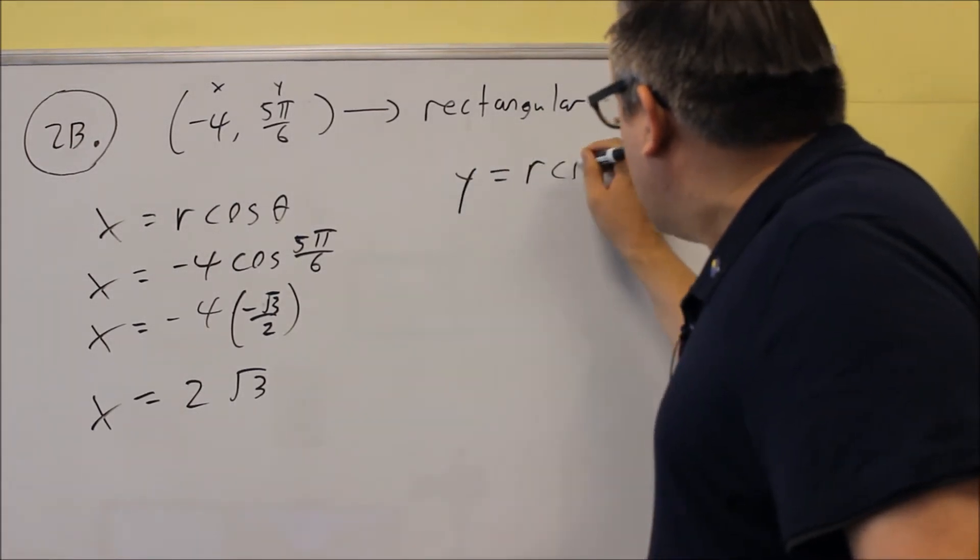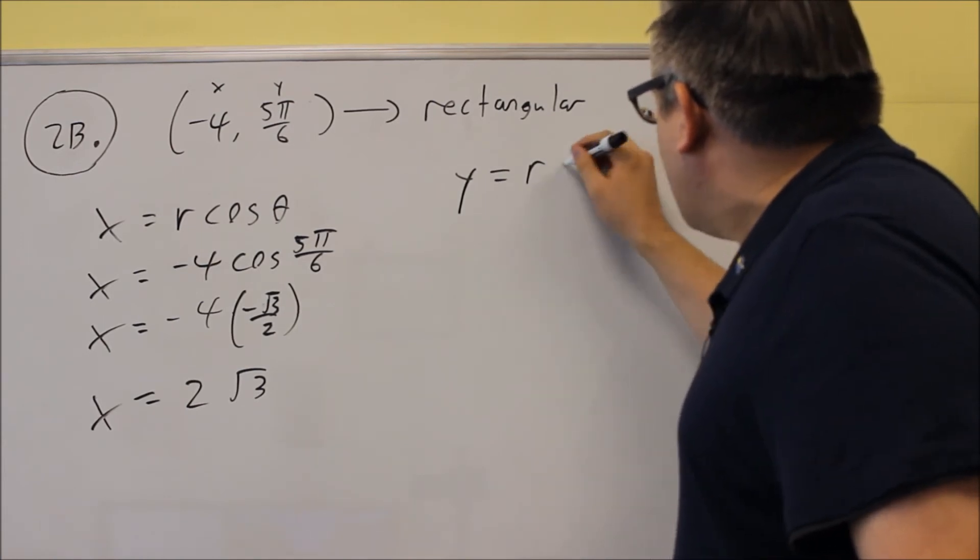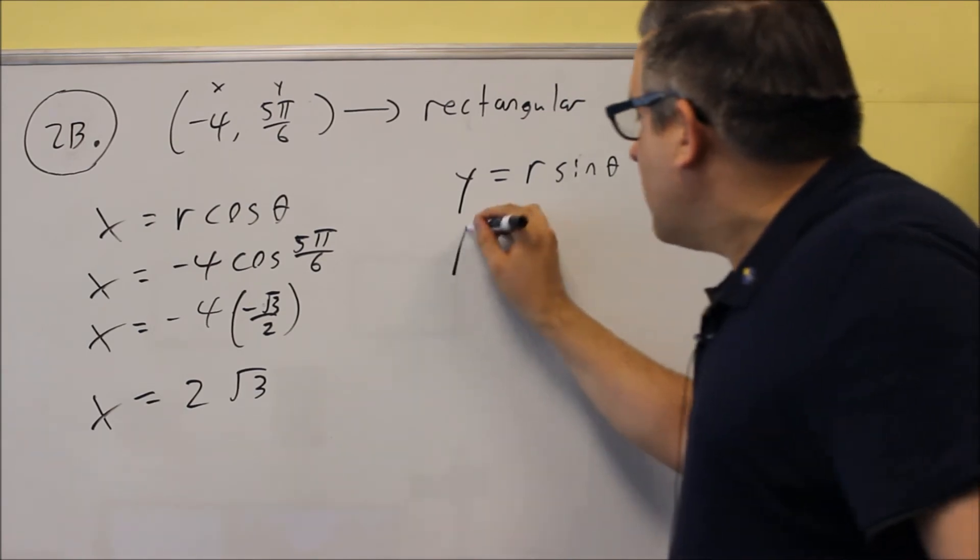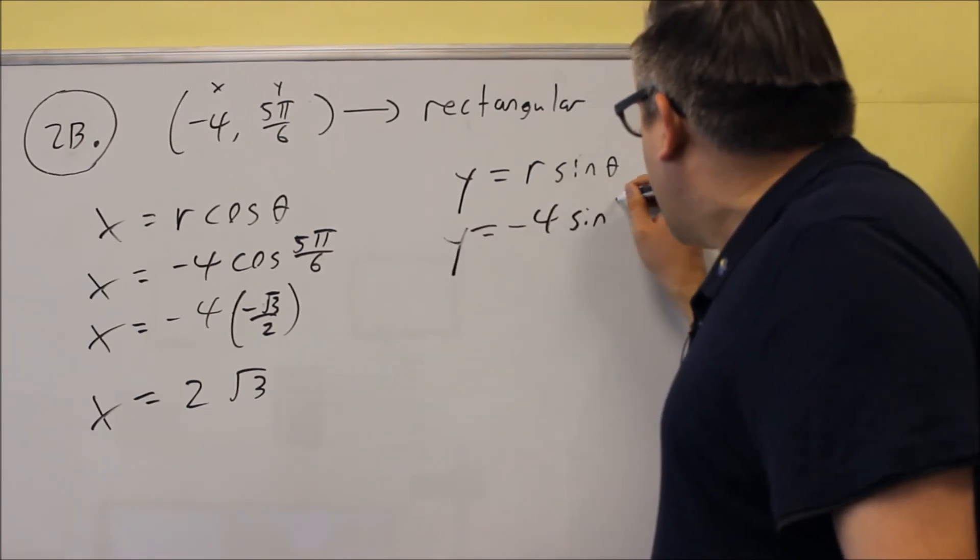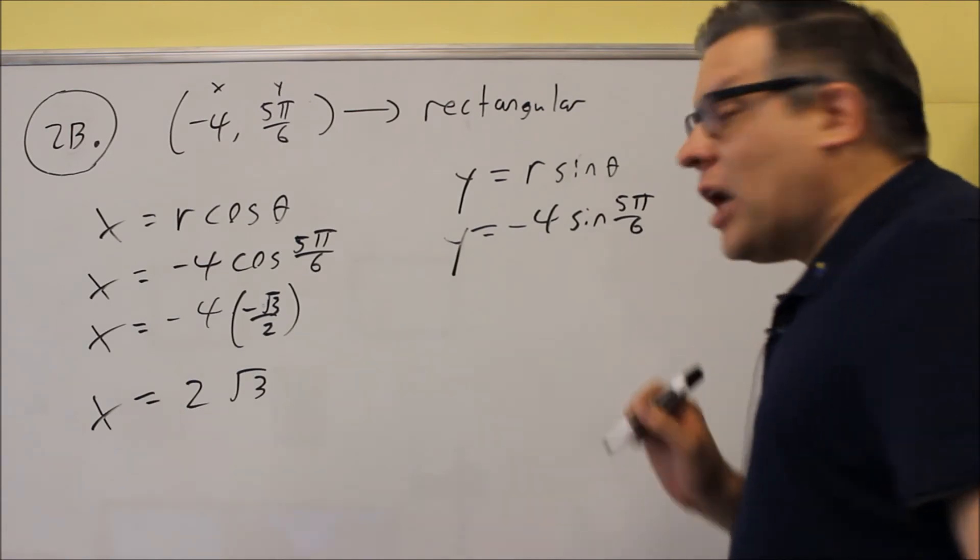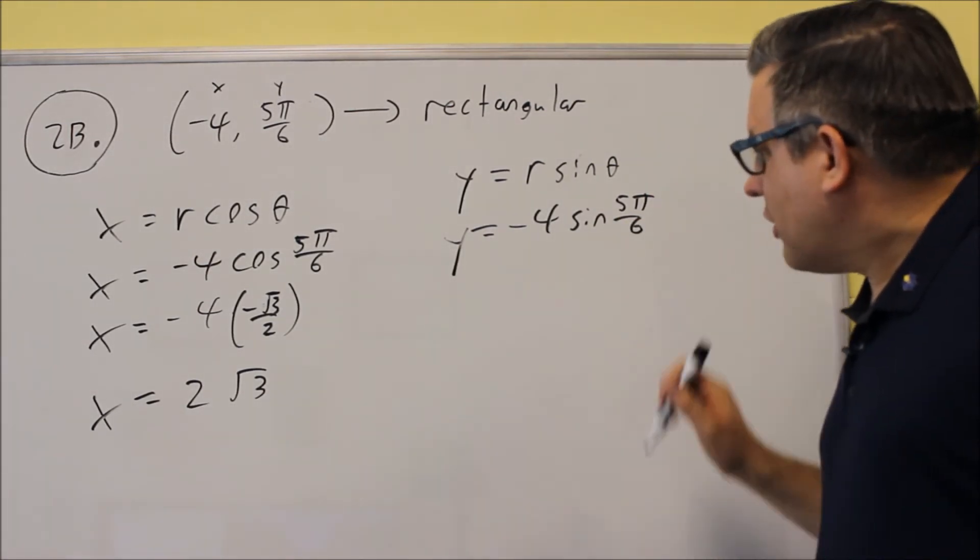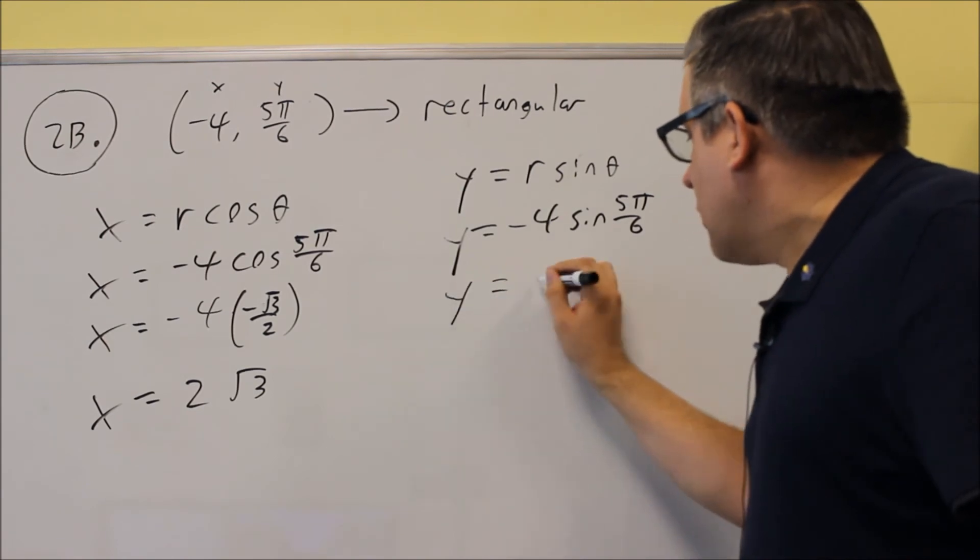To find the y, you're going to do r sine theta. Okay, so you have y equals r sine theta. Y is equal to negative 4. We're going to do sine of 5 pi over 6. Once again, you want to use your unit circle on that one.